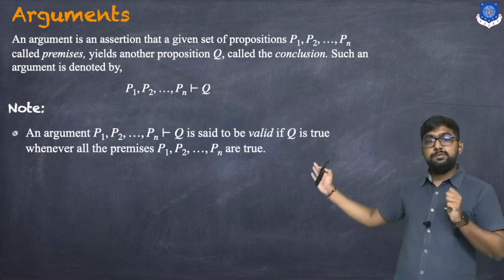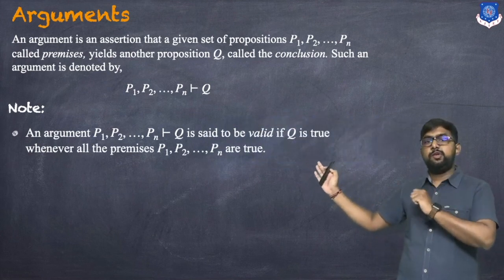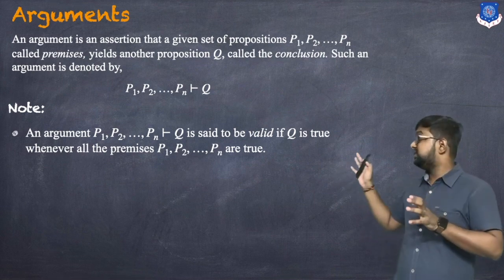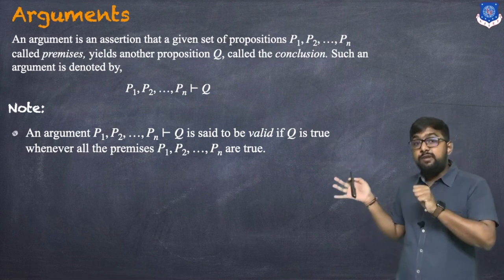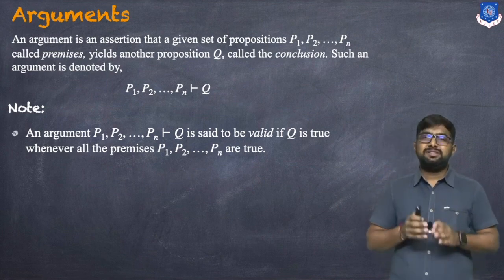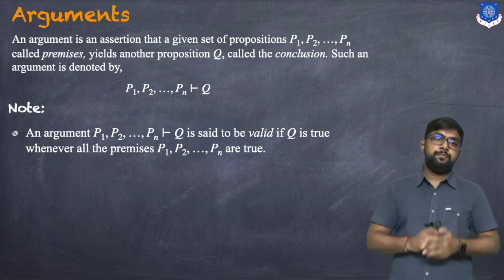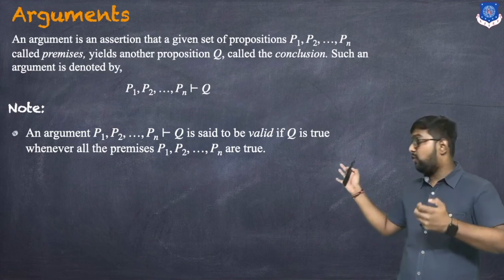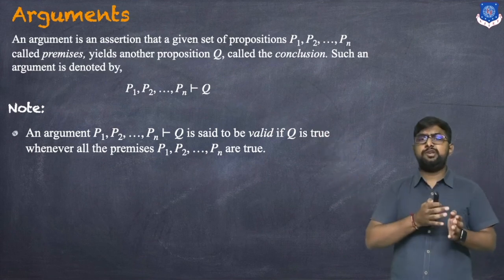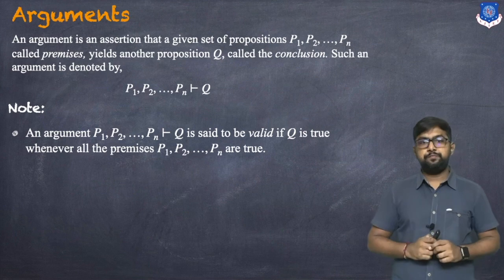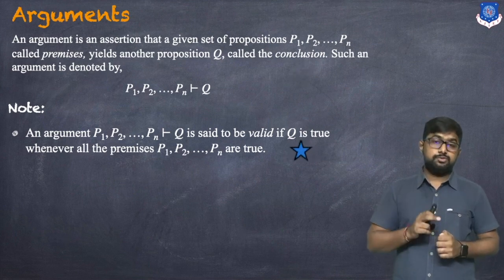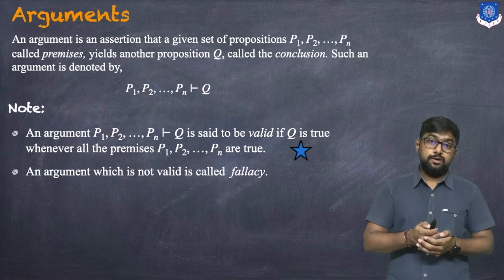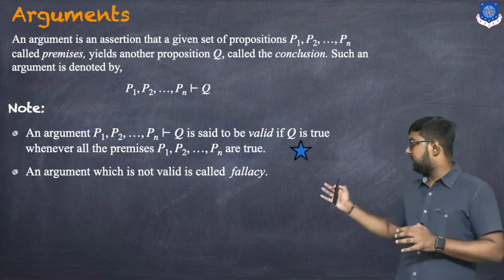An argument p1, p2, ..., pn ⊢ Q is said to be valid if the conclusion Q is true whenever all the premises p1, p2, up to pn are true. Q is true if and only if all the premises are true. An argument which is not valid is called a fallacy.